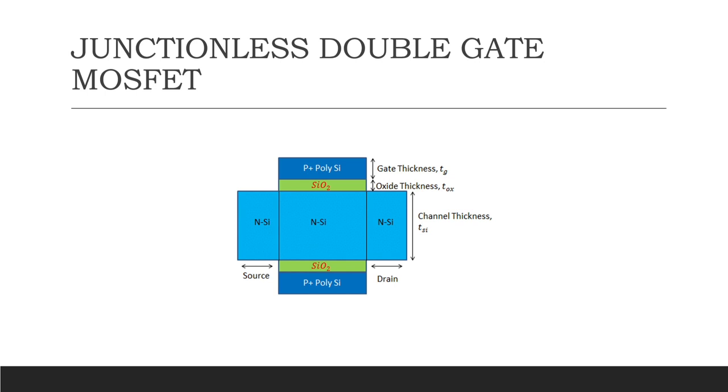The advantage is junctionless can exhibit low leakage currents and excellent short channel behavior at shorter gate lines. Double gate MOSFET, as the name says, uses two gate terminals. The second gate terminal is useful to control and reduce the feedback capacitance between input and output and thus amplifiers become more stable. It is mostly used in higher frequency RF amplifier applications.